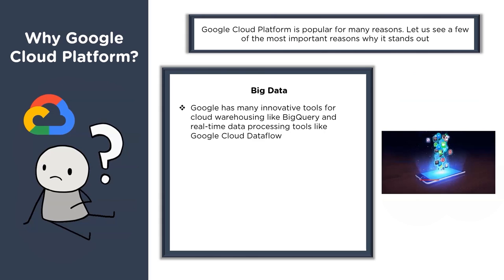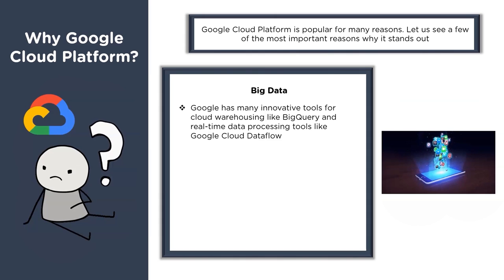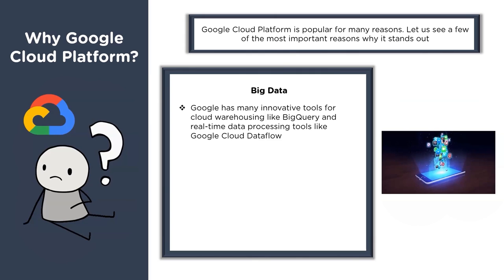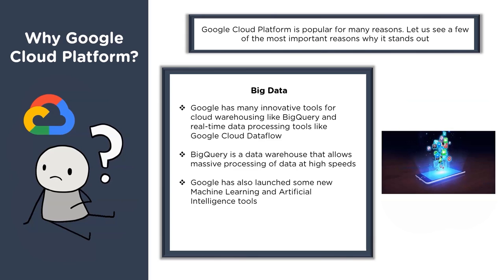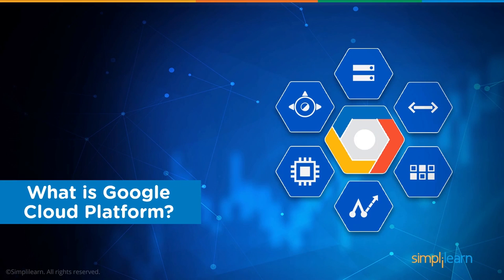When we talk about big data, it is data which is very complex with characteristics such as volume, velocity, variety, veracity, validity, volatility, and virality. Google Cloud can be a better choice for big data because Google has many innovative tools such as BigQuery for cloud warehousing and Dataflow for real-time data processing. BigQuery is a data warehouse that allows massive processing of structured data at high speeds.